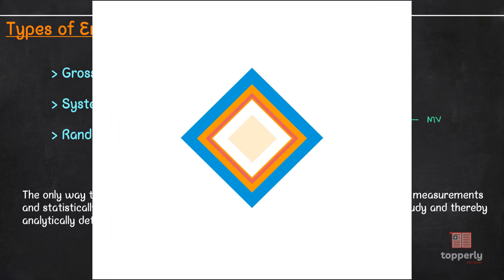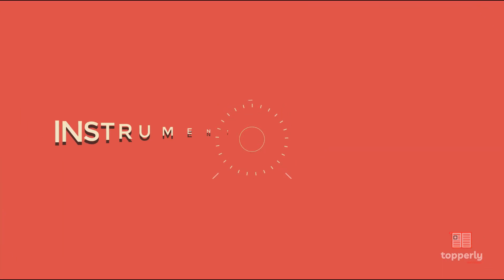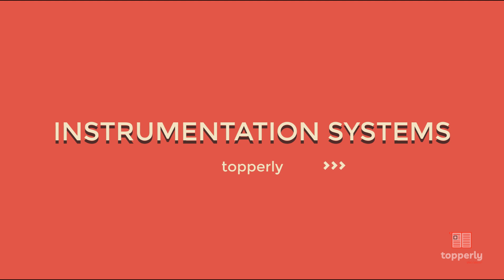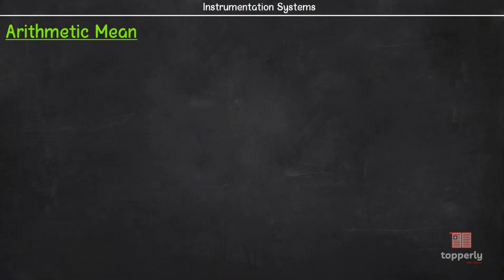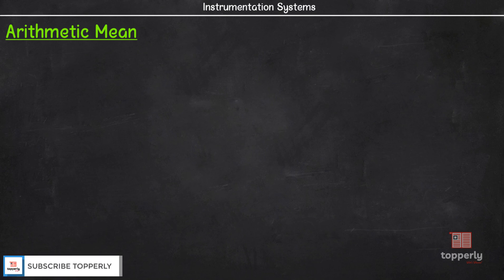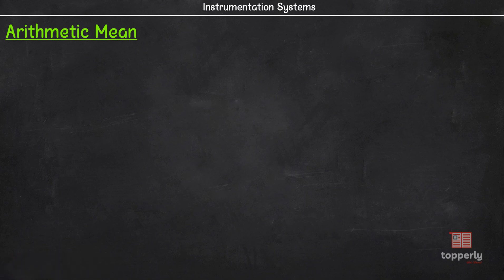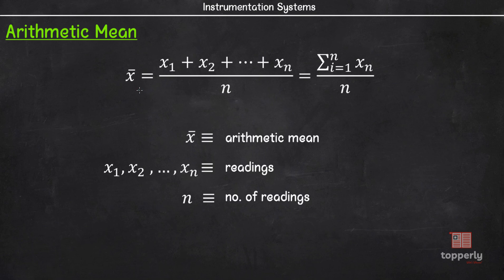So let's start our lecture now. The first statistical method we employ is arithmetic mean. The most probable value of a measured variable is the arithmetic mean of the number of readings taken, and the best approximation will be made when the number of readings of the same quantity is very large. The arithmetic mean is given by x̄ = (x1 + x2 + ... + xn) / n, where x̄ is the arithmetic mean, x1, x2, ..., xn are the readings and n is the number of readings.